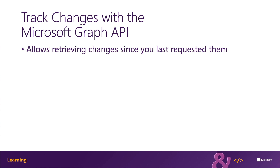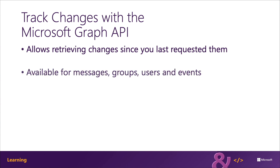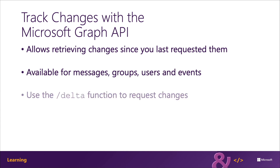This is done using something called Track Changes, also known as Delta Query. Delta Query is supported on email messages, groups, users, and the events object in Microsoft Graph. The way it works is that an application submits a GET request to a particular endpoint — let's say slash users — and the endpoint also includes the slash delta function added to the end of the URL.